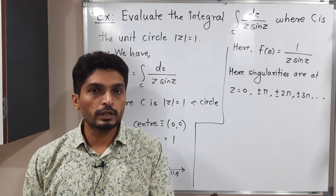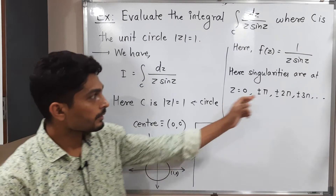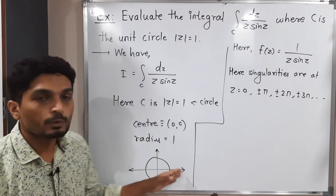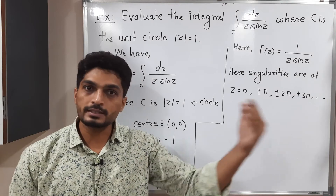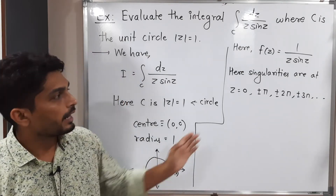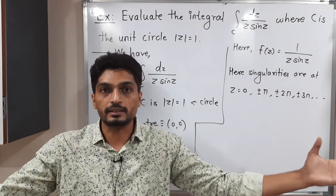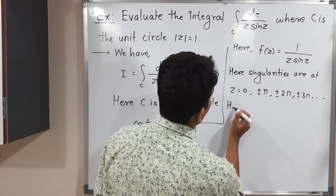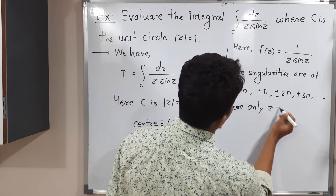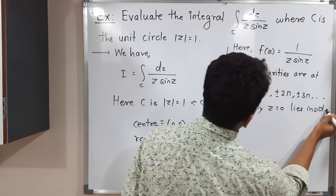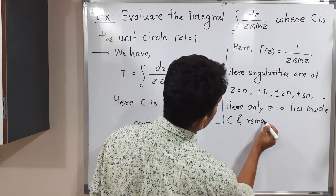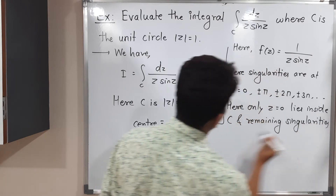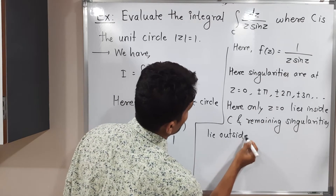We have to focus only on those singularities which lie inside the circle. The value of π is approximately 3.142, which is greater than the radius of 1, so π lies outside the circle. All remaining singularities (±π, ±2π, ...) also lie outside. Therefore, only z = 0 lies inside C, and all remaining singularities lie outside C.